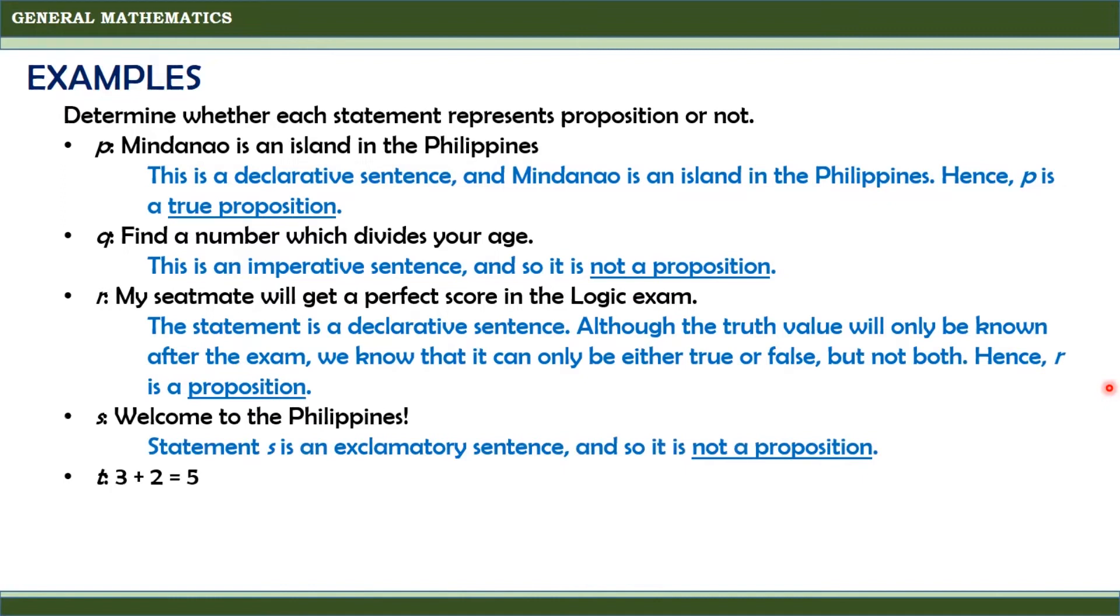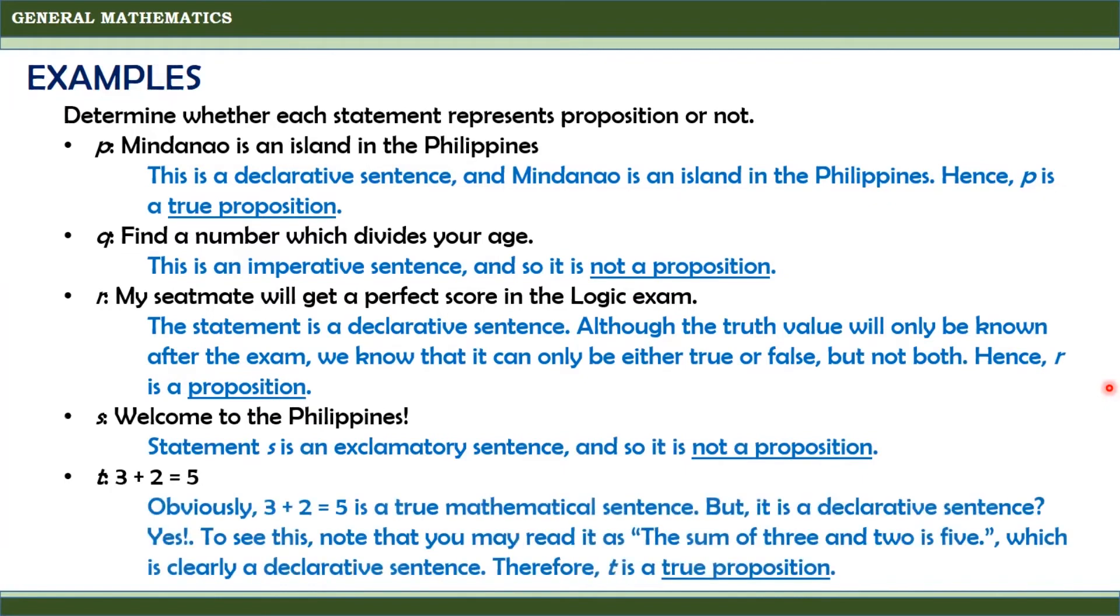Statement T. 3 plus 2 equals 5. Obviously, 3 plus 2 equals 5 is a true mathematical sentence. But is it a declarative sentence? Yes. To see this, note that you may read it as the sum of 3 and 2 is 5, which is clearly a declarative sentence. Therefore, T is a true proposition.